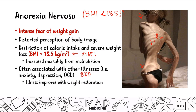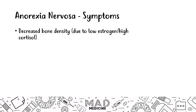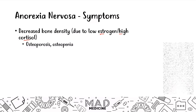The illness generally improves with weight restoration. The symptoms for anorexia include decreased bone density due to low estrogen and high cortisol. Because there is low fat in the abdomen, they're not going to be producing estrogen as much. At the same time, because of the restriction in calories, cortisol levels are going to be very high, putting the body in a fight-or-flight mode. This can lead to chronically decreased bone density, seen with osteoporosis or osteopenia.